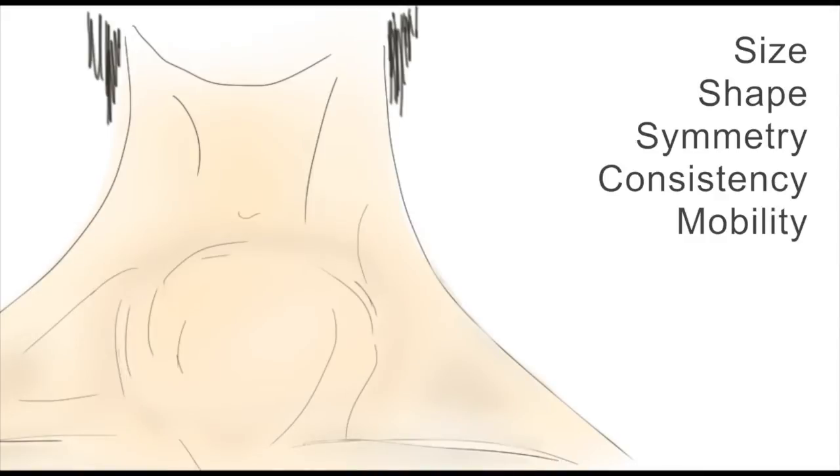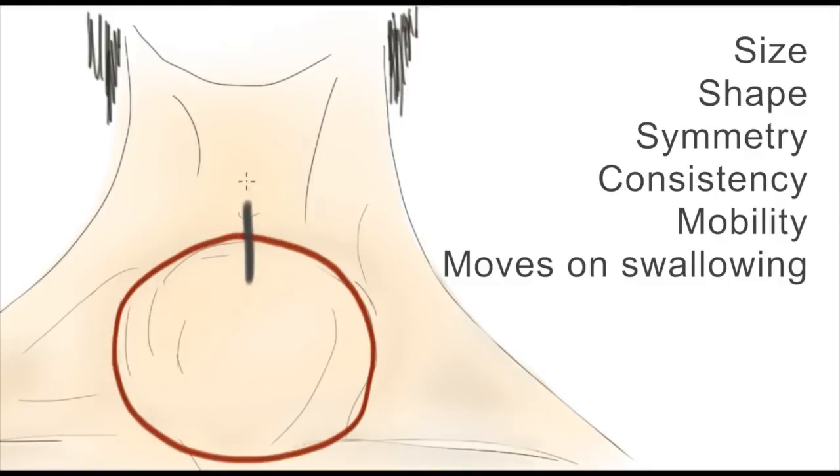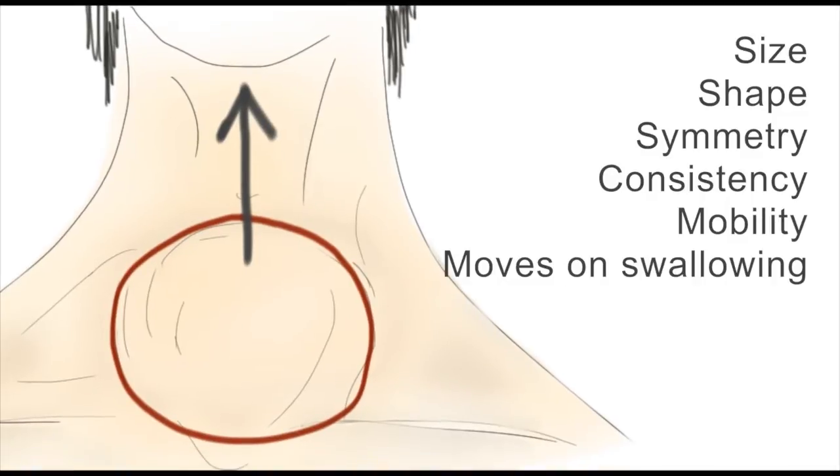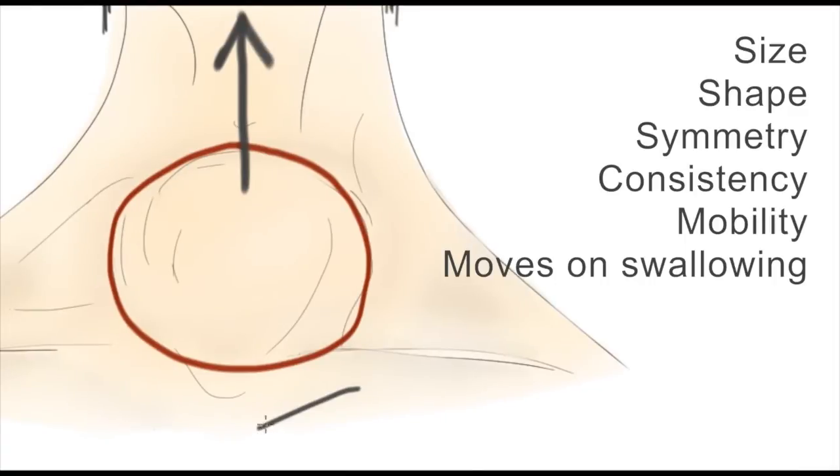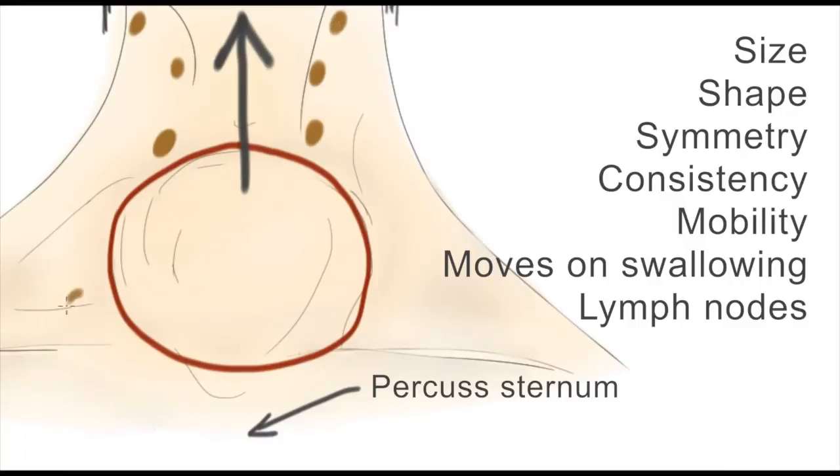Now at this point, you may only suspect the neck lump is coming from the thyroid. The feature that may clinch it is that it moves superiorly with swallowing. It should also not move with tongue protrusion, which is a feature of a thyroglossal cyst. Percuss the sternum in your exams to show that you are assessing the goiter for any retrosternal extension. Finally, always check for cervical and supraclavicular lymphadenopathy.